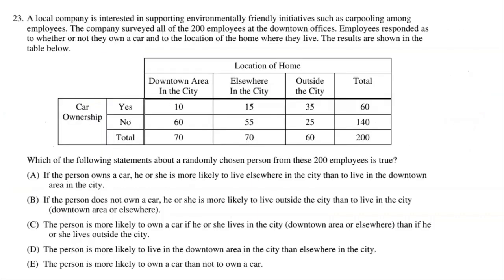The next question involves categorical data, not quantitative. A local company is interested in supporting environmentally friendly initiatives such as carpooling among employees. The company surveyed all 200 employees at the downtown office. Employees responded to whether or not they owned a car and to the location of their home. First we asked: do you own a car — yes or no? 60 people said yes, 140 said no. Then we asked where they live: in the downtown area, elsewhere in the city, or outside the city — resulting in 70, 70, and 60 respectively.